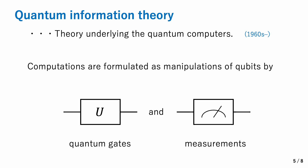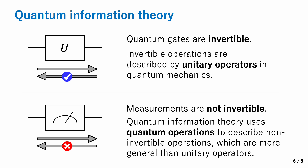We've been discussing symmetry so far. Let us move on to another important aspect of our work: quantum information theory. Quantum information theory is the underlying theoretical framework of quantum computers and is an extremely active area of research. In quantum information theory, computations in a quantum computer are modeled as a sequence of operations — such as quantum gates and measurements — on qubits. Qubits are a quantum version of computer memory. Quantum gates are invertible operations on qubits, and in quantum mechanics such invertible operations are described by a mathematical concept known as unitary operations.